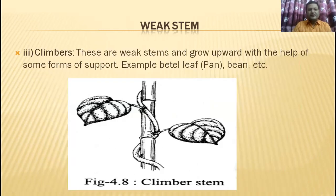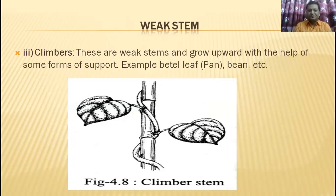The third category of weak stems is climbers. These are weak stems that grow upward with the help of some form of support. Examples are bitter gourd, fun (in Bangla), and bean. These plants need a support to grow upward, which makes them climbers.